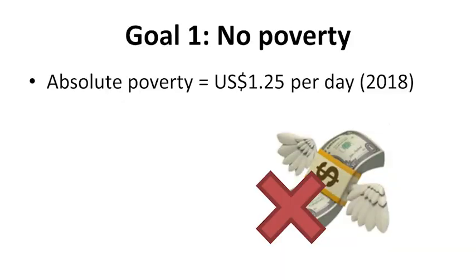The first goal is NO POVERTY. Absolute poverty refers to people living under US$1.9 per day, as calculated in 2015. This goal aims to move everyone in the world that is under the absolute poverty line above it.